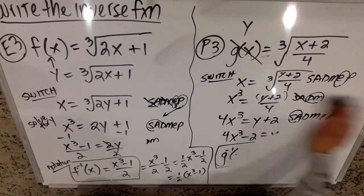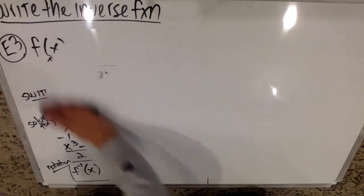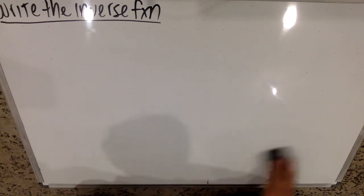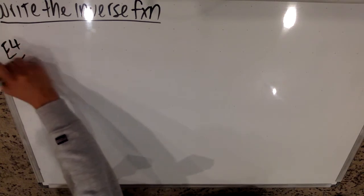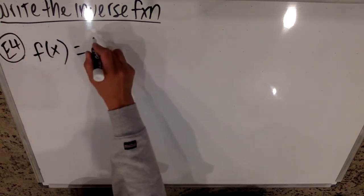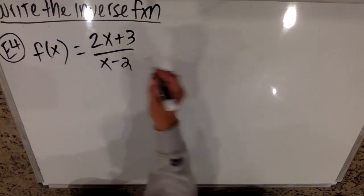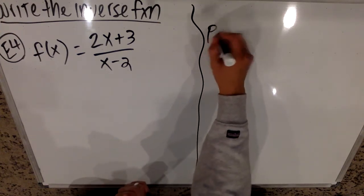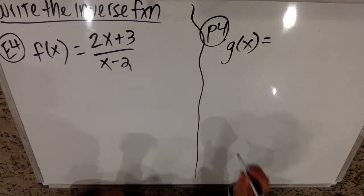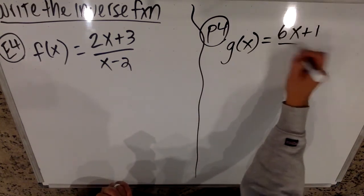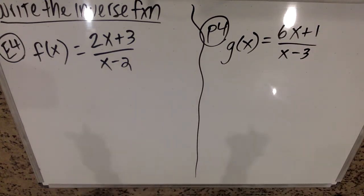Let's take it up a notch. For E4 and P4, what's going to be tricky is we're going to have more than one Y to solve for. So in E4, we're going to do F of X equals 2X plus 3 over X minus 2. And in P4, let's call it G of X equals 6X plus 1 over X minus 3. We're going to find these inverse functions again.